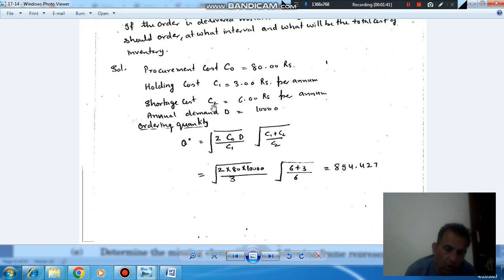And now we have C-not as the procurement cost as Rs. 80, holding cost C-1 as Rs. 3, and C-2 as Rs. 6, and demand as Rs. 10,000. Putting these values, we can find the order quantity that is Rs. 894.427.